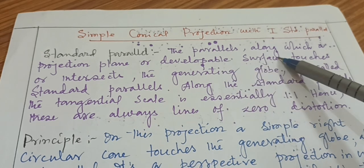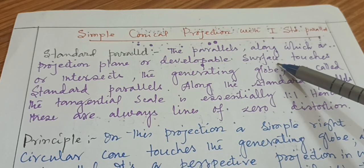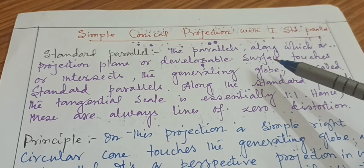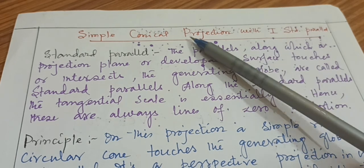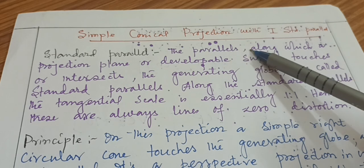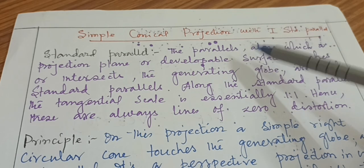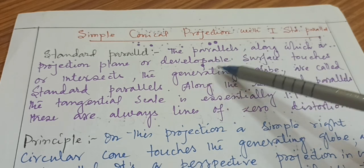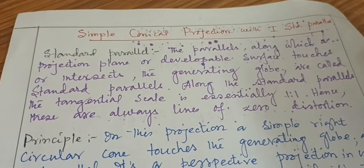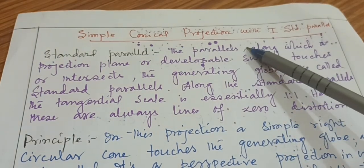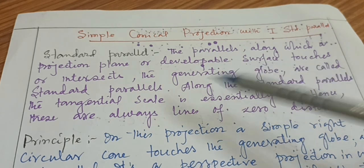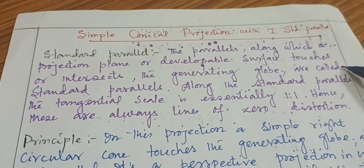What is the developable surface? In perspective projection we use a generating globe, a source of light, and a plain sheet of paper. For a simple conical projection, the conical name comes from the concept of a cone. When that cone made of paper is cut and made flat, that is the developable surface. So the parallel along which the developable surface touches or intersects the generating globe is called the standard parallel.